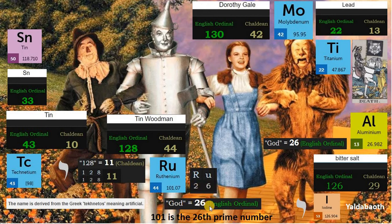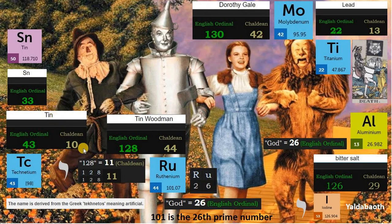Tin is 43 in English ordinal, matching element technetium, meaning artificial. Sn is 33, and 33 is arsenic, with an atomic mass of 74, tied to Lucifer in English ordinal. Tin is 10 in Chaldean, like the yod. 118 is like 28, and 28 is Lucifer.